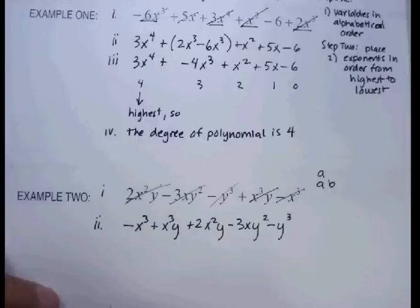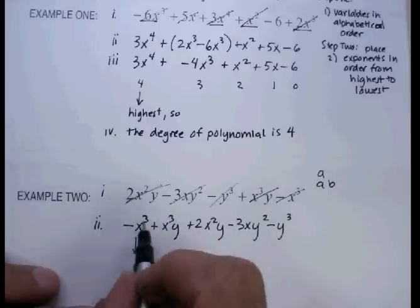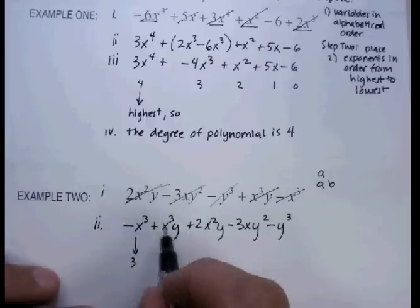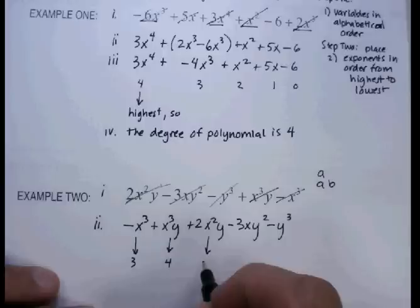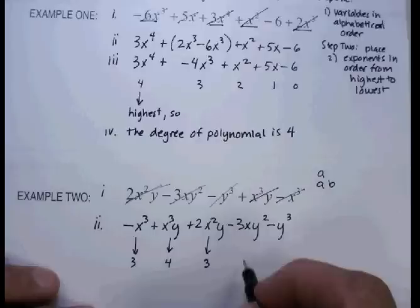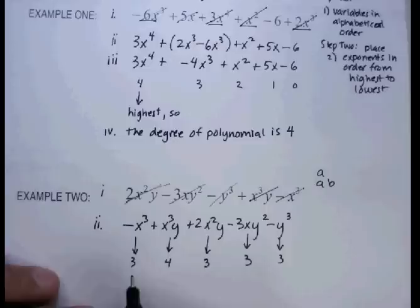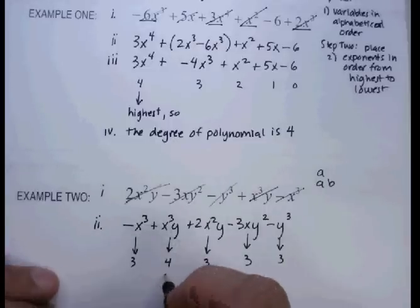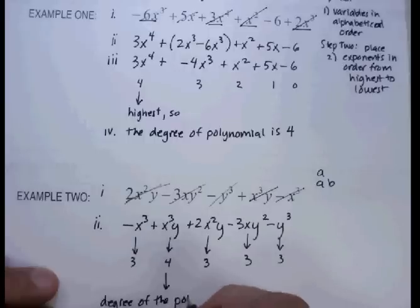Now let's look at the term of this polynomial. Let's go through each of the terms and add up the exponents. That one is 3. That's 3 plus 1. That's 2 plus 1. That's 1 plus 2. And that's 3. Which one of those is the largest? Clearly this one is the largest. So the degree of this polynomial is 4.